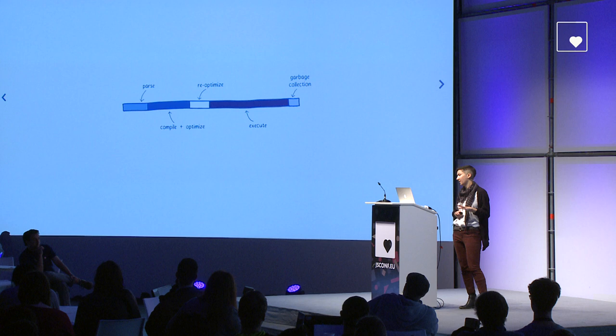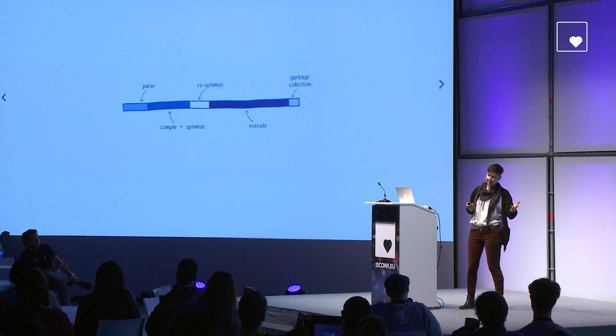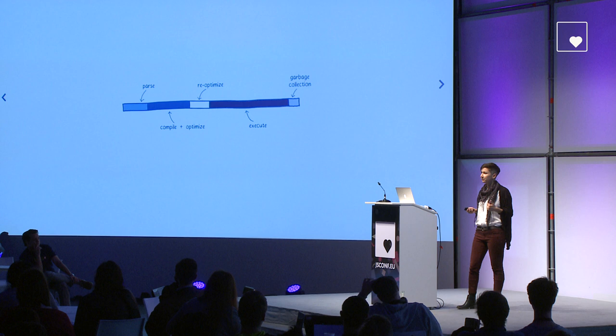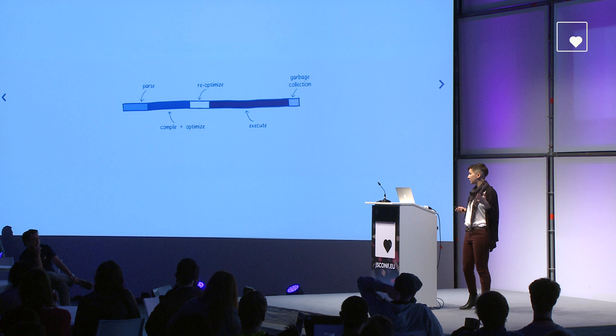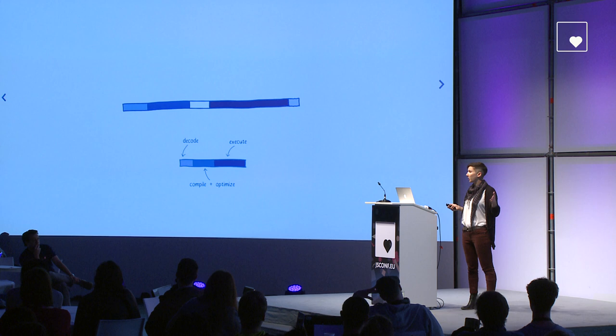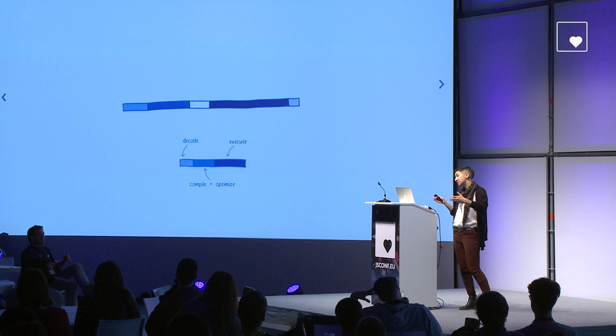To do this, I need to explain a little bit about where JavaScript spends its time today. Here's a diagram of where the JS engine spends its time for a hypothetical app. The categories are: parsing, compiling and optimising, re-optimising, executing the code, and garbage collection. Now let's look at what this diagram would look like for WebAssembly — you'll notice that some of the bars are shorter and some are missing. I want to explain what WebAssembly changes, how it makes the amount of time the engine spends in these tasks shorter or gets rid of them altogether.